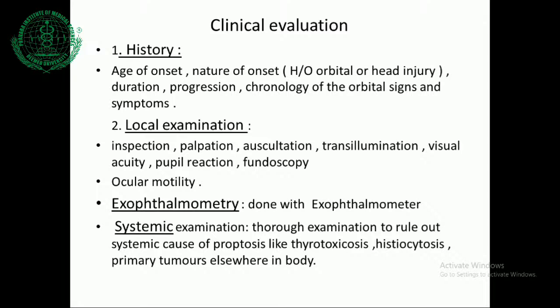On auscultation, in many cases you can listen to a bruit, especially in AV communication. Transillumination can be performed if the tumour mass is in the anterior portion. Visual acuity may be diminished. Pupil reaction may be normal, dilated, sluggishly reacting, or totally non-reacting. Ocular motility may be reduced, especially towards the side of the lesion. The actual measurement of the bulging is done by exophthalmometry. The actual protrusion can be measured with the instrument exophthalmometer. In doubtful cases, you can confirm proptosis by placing a scale vertically over the orbital margins.